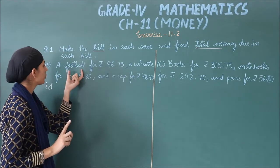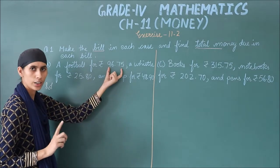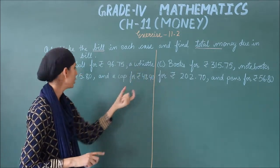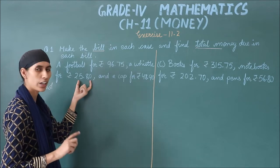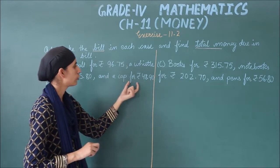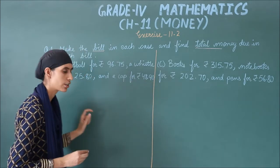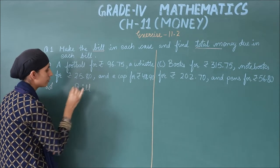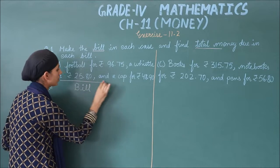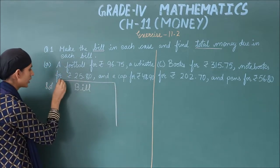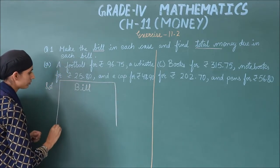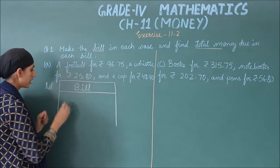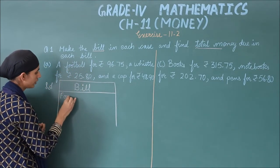You have to buy: a football which costs ₹96.75, then a whistle for ₹25.80, and a cap for ₹48.90. So how to make the bill — you will write 'Bill' at the top, then draw a line with a pencil or scale.